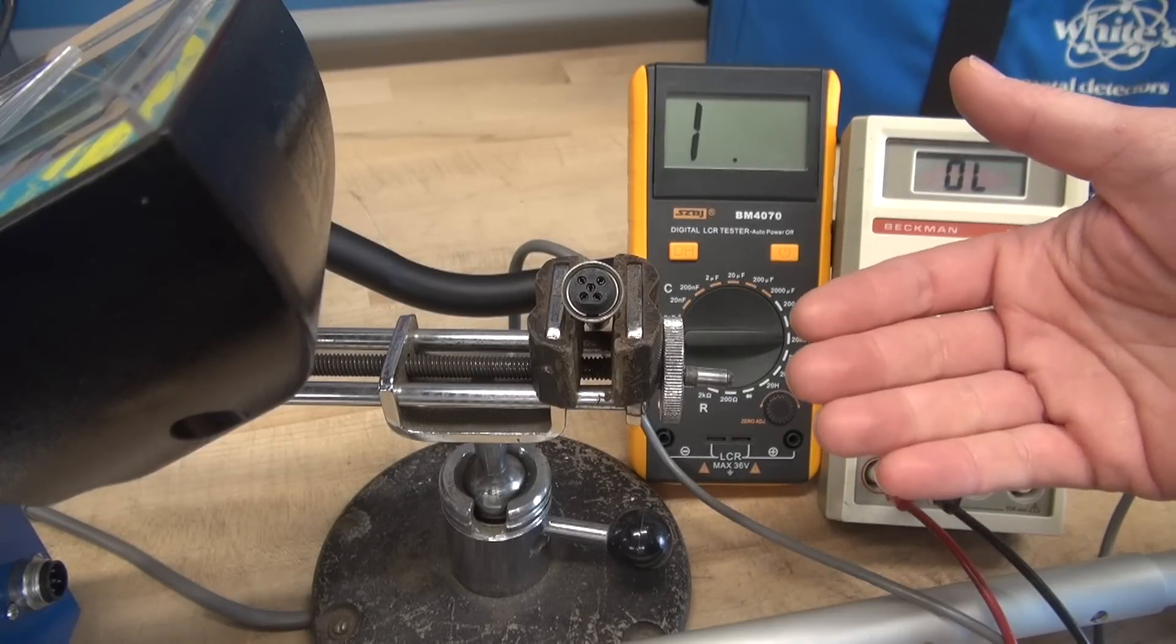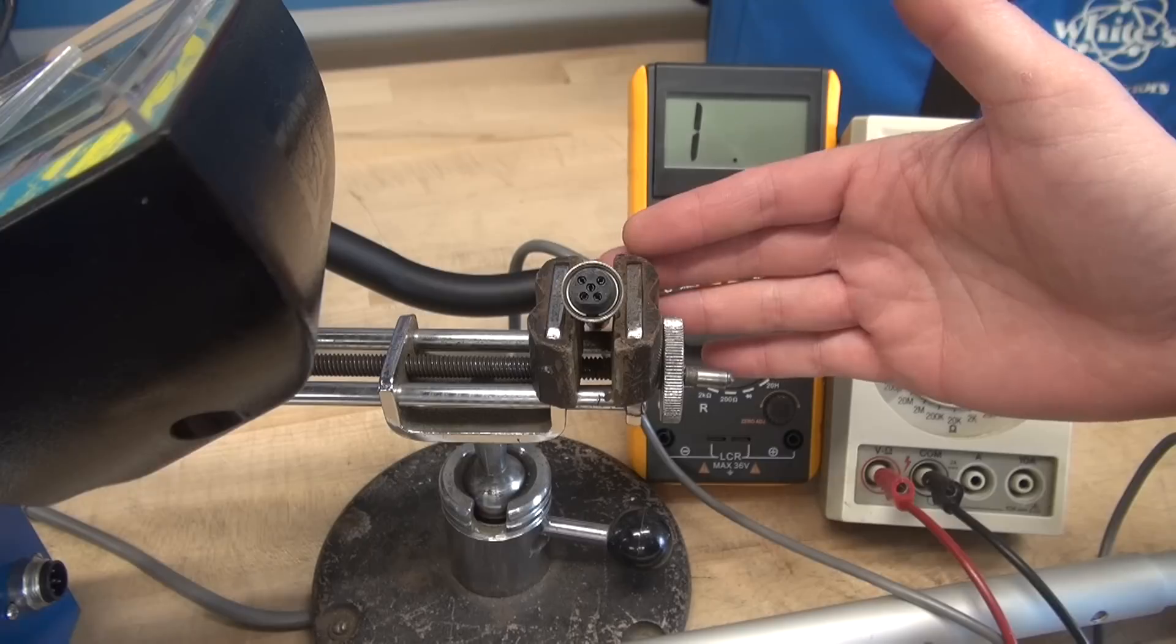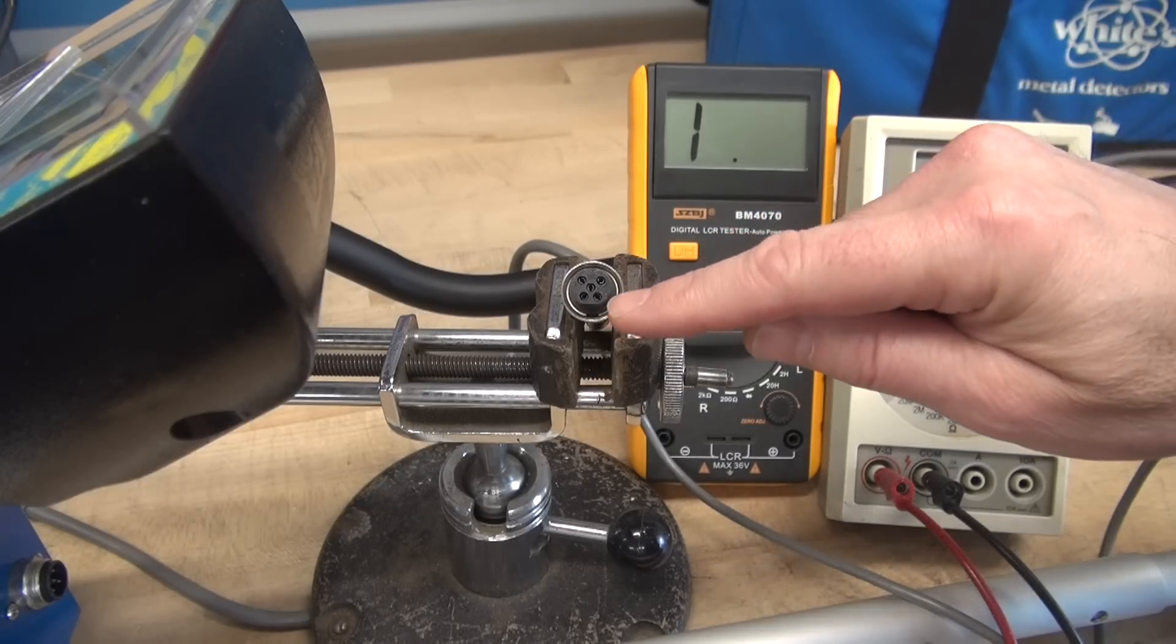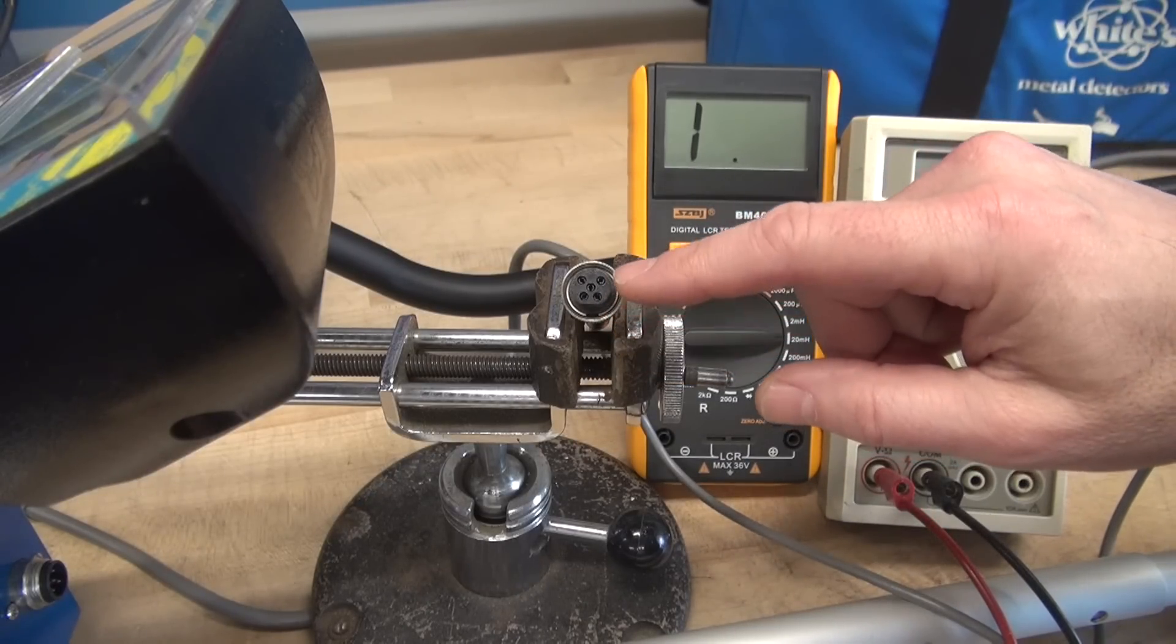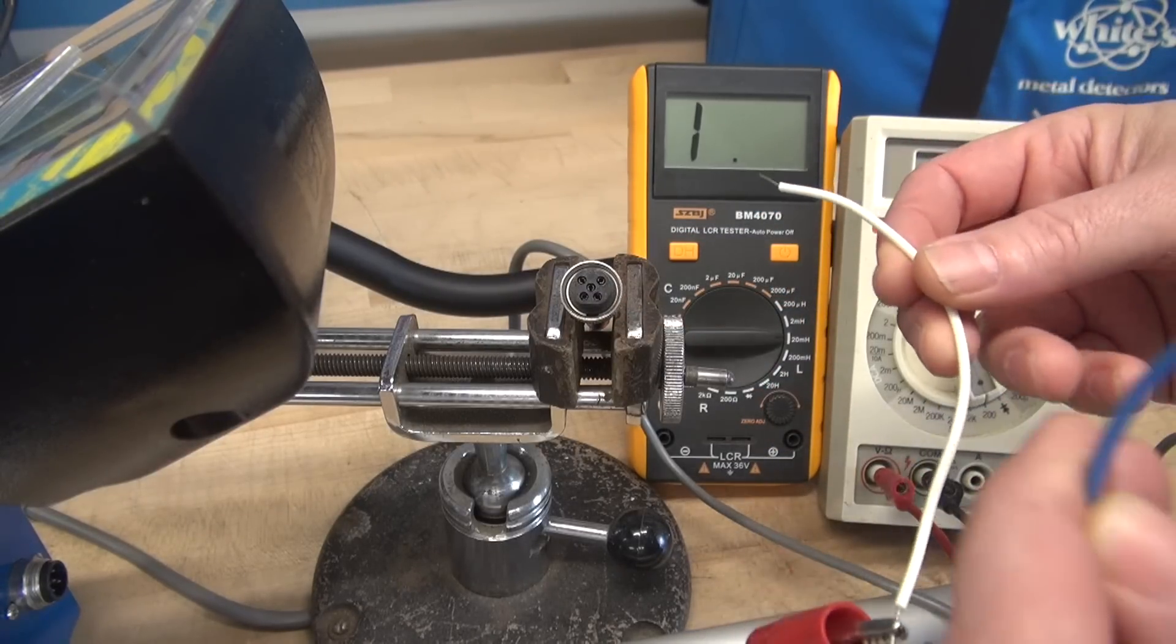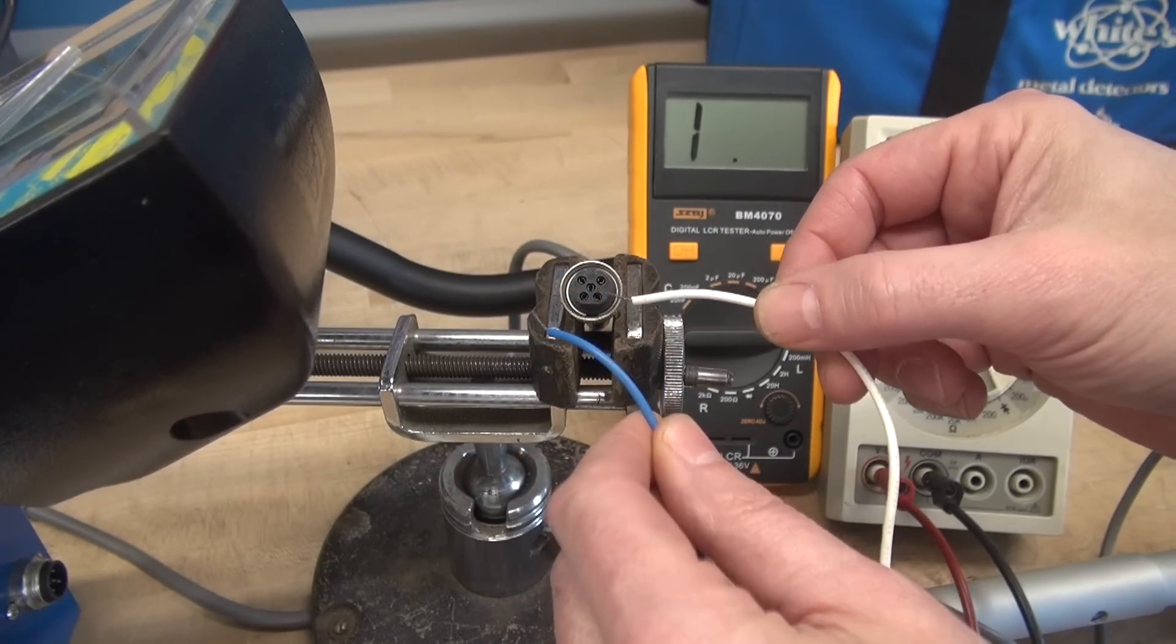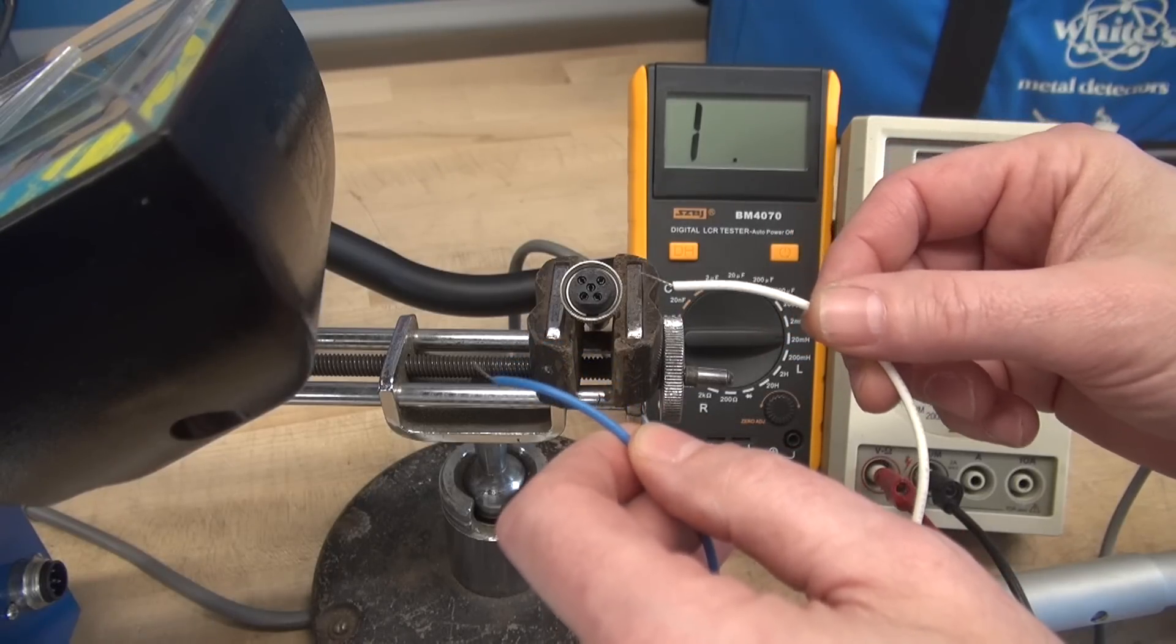So when you get ready to buzz out this connector, it may be a good idea to do what I've done here: put it in a little vice to hold it steady. The other thing you don't want to do is take your meter and try to cram the tips into these holes to make connection, because you can either damage the contacts or crack this housing. So what I do is take my meter, grab a couple pieces of wire, and put those pieces of wire in those holes so I can't damage this connector.